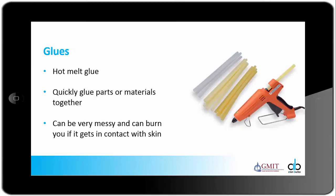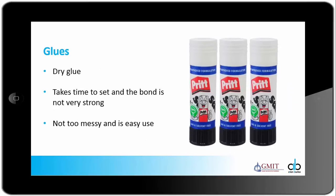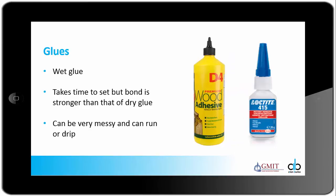Some glues now. There are usually three types of glue used in model making. As shown here is a hot melt type glue — it is very good for gluing parts quickly but can be very messy and can burn you if it gets in contact with your skin. Other types include the Pritt stick, a dry glue which takes time to set and the bond is not very strong, but it is easy to use. The more common wet types such as Loctite or premium wood adhesive take time to set but the bond is very strong; they can be very messy and tend to run or drip.